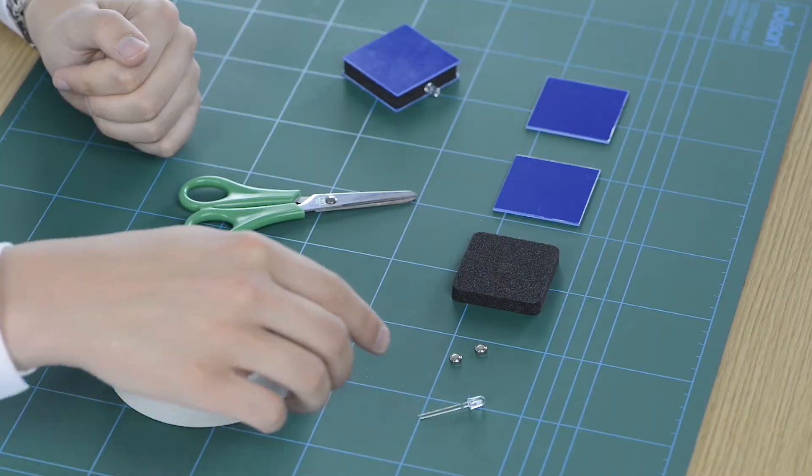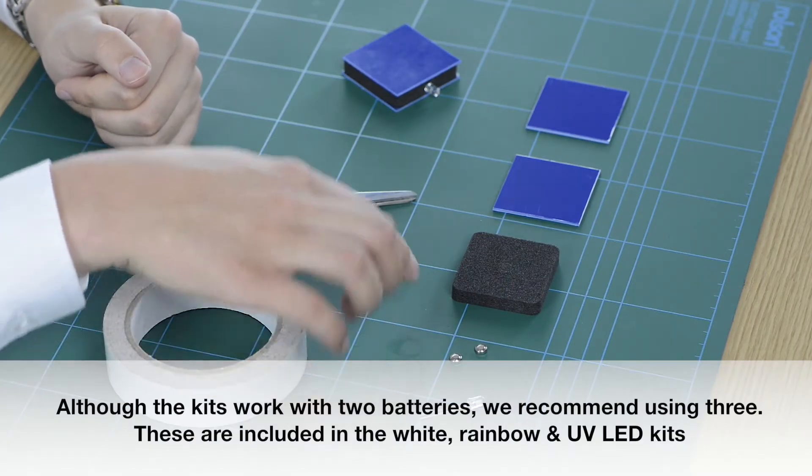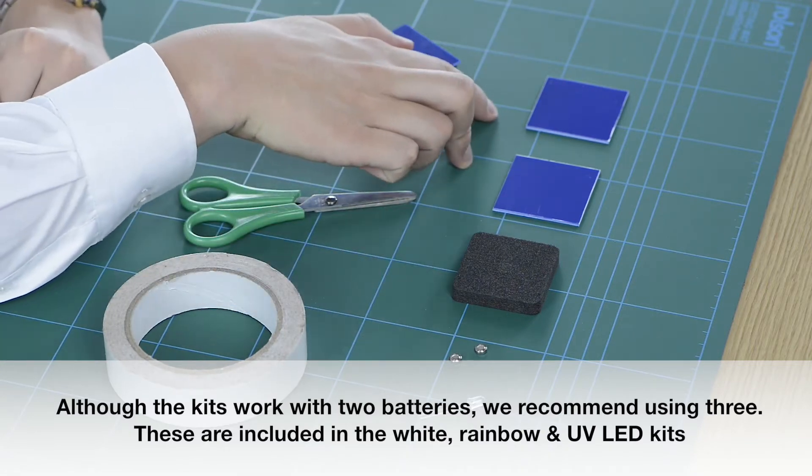The kit contains an LED, two coin cell batteries, a Plastazote foam square and two plastic backings.